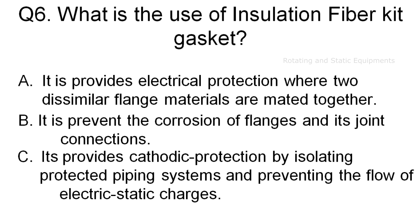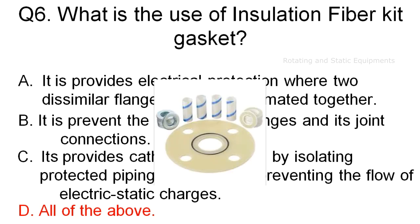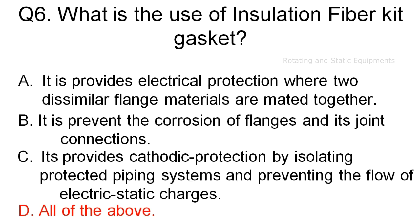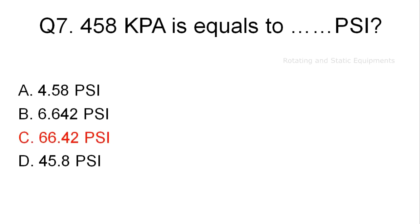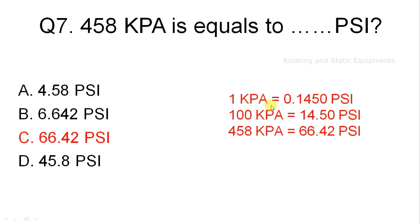Question 6: What is the use of an insulation fiber kit gasket? The correct answer is Option D — all of the above. Insulation kit gaskets are specified to offer electrical protection where two dissimilar flange materials are mated together. The purpose of a flange insulation kit gasket is to prevent corrosion of the flanges and flanged joints that static currents present in a piping system may induce. Question 7: the correct answer is Option C. 1 kilopascal equals 0.1450 psi; 100 kilopascal equals 14.50 psi; therefore, 458 kilopascal equals 66.42 psi.